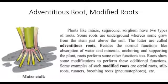Roots show some modifications to perform additional functions. Examples of such modified roots are aerial roots, stilt roots, runners, and breathing roots (pneumatophores). Now take some water in a small glass jar, put a plant in it so that its roots are dipped in the water, mark the water level on the jar, and add 5 ml of oil to the water. Record the water level on the next day.